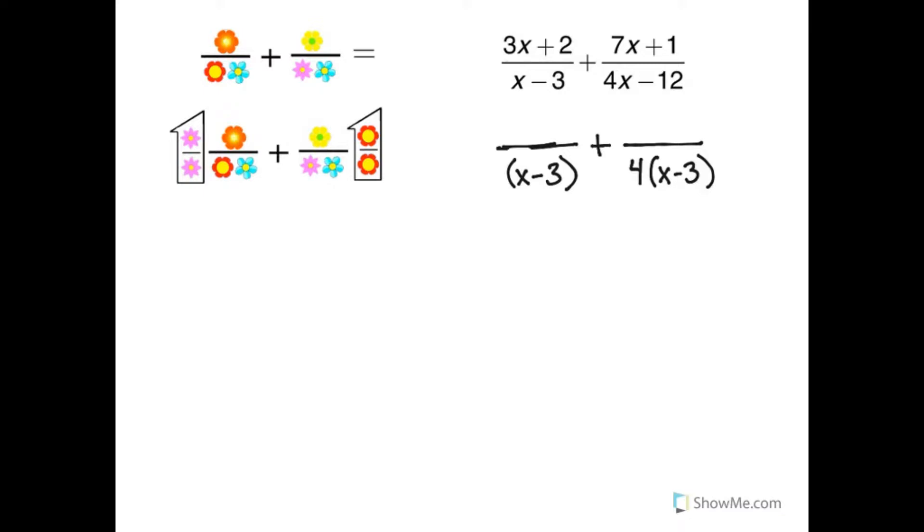So x minus 3 in this case is in common already, but the second fraction has a 4 that the first fraction doesn't have. So let's look at that 4 and give it to the first fraction, and I have to write it as 4 over 4.